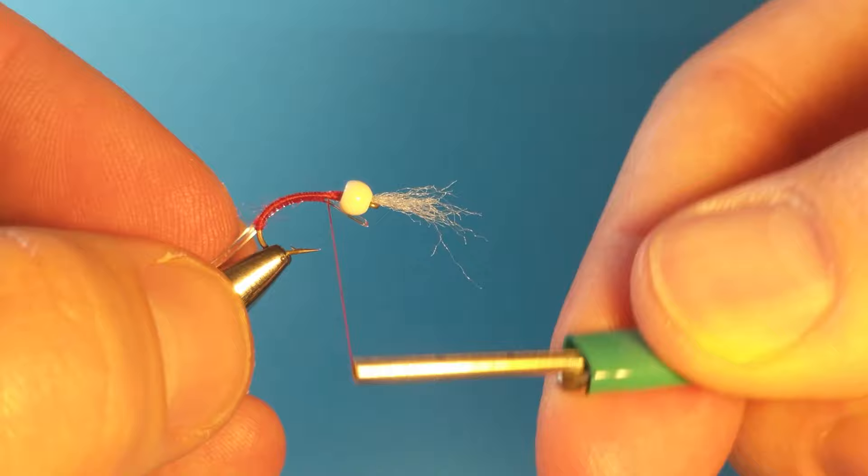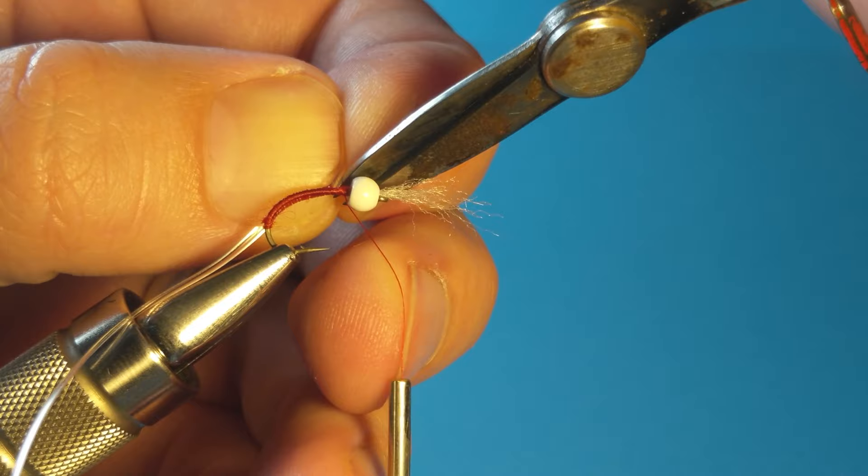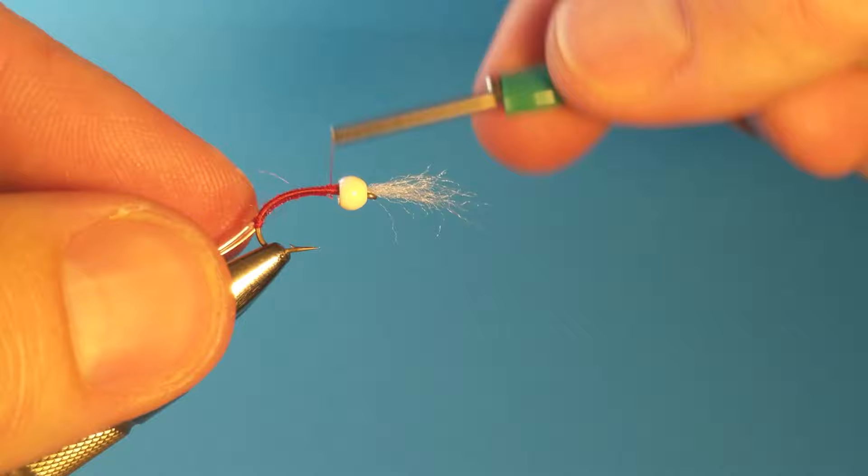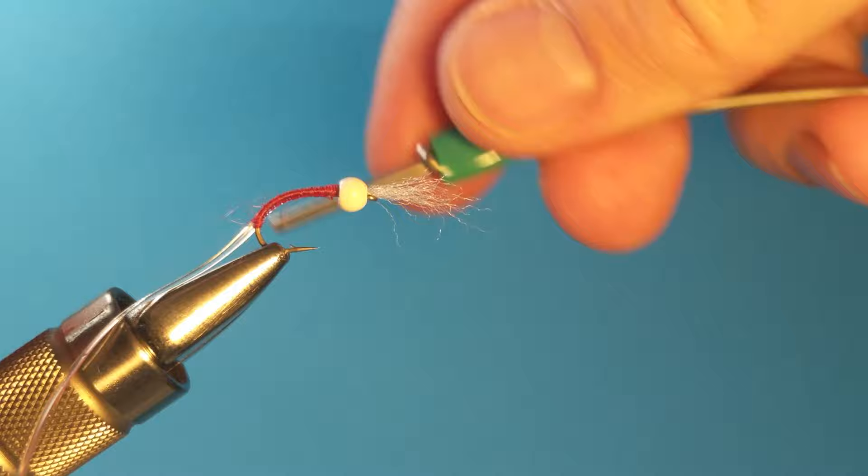And just wrap that all the way up. If it gets too far up there, just go ahead and cut the excess off. You can pull it tight. Snip it off. Continue your wraps. Just make sure it's all covered. You can kind of build up a base here. These bugs kind of taper from the back to the front, so they're a little bigger at the head. A little thread base isn't a bad thing.